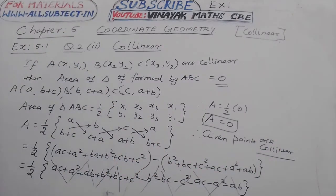Area of triangle 0 means given points are collinear, right? Question number 2 is over.